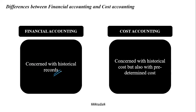Financial accounting is concerned with historical records, whereas cost accounting is concerned not only with historical cost but also with predetermined cost. Predetermined cost is nothing but estimations — for example, in 2021 you make estimations for 2021-22. When you get into 2021-22, cost accounting deals not only with historical cost but also with these estimations, which are kept as the base for taking appropriate decisions. Financial accounting just provides information about what has already happened, so it is historical in nature.